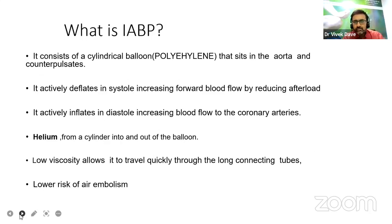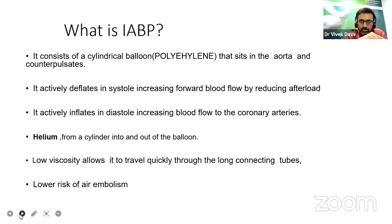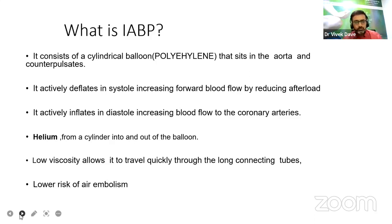As far as the nursing perspective is concerned, many of you have worked in coronary care unit where you have received post-myocardial infarction cardiogenic shock patients, in which you need to put balloon pump as a bridge of therapy. IABP consists of a cylindrical polyethylene balloon that sits in the aorta and counter-pulsates. It actively inflates in diastole, increasing blood flow to the coronary arteries. Helium is the gas used — low viscosity, allowing it to travel quickly through the long connecting tubes — and it lowers the risk of air embolism.